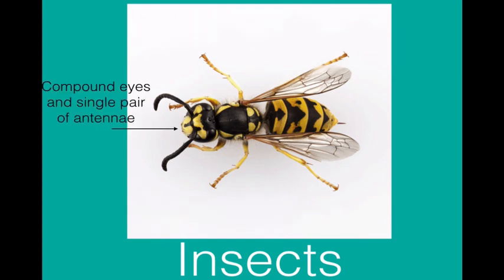Insects have compound eyes and a single pair of antennae to sense their environment. The antennae are used to sense chemicals in their environment.